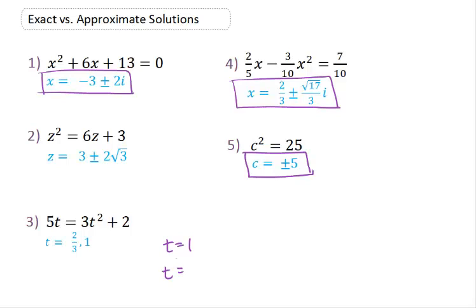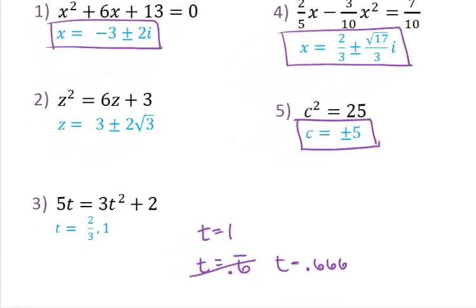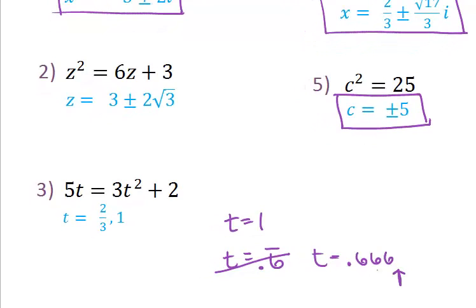The way that we convert these is we look at them in decimal form. If you type 2 divided by 3 in your calculator and push enter, you should get the decimal approximation, which is 0.6 repeating. When the online homework asks for approximate answers, it usually asks you to round to four decimal places. So rather than 0.6 repeating, we list it as 0.6667 — since the next digit is 6, we round up. That is our approximation of 2/3.